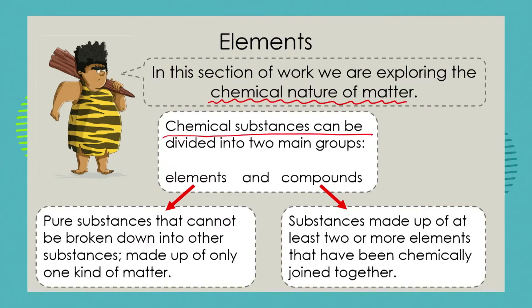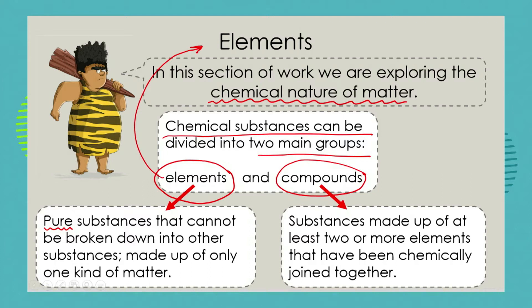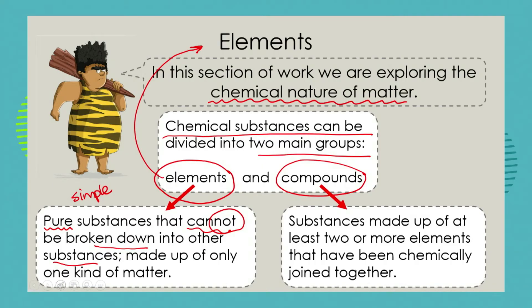All chemical substances can be divided into two main groups. The one group we call elements, which is the subject of our lesson today, and the other group is called a compound. So now we're getting closer to our definition of element. Elements are pure substances. They cannot be broken down into other substances. They are what we might call simple substances — they only have one kind of matter making up that element.